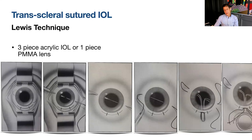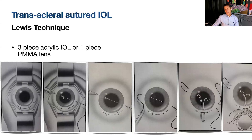The other option is scleral suture fixation — the Lewis technique. We use a prolene suture and create two opposing triangular scleral flaps at 50% thickness. At two millimeters from the limbus we pass a straight 10-0 prolene suture and a 27-gauge insulin needle, also two millimeters from the limbus underneath the scleral flap. We pass the prolene needle into the insulin needle to exteriorize both sutures, then bring them through the wound with a hook.